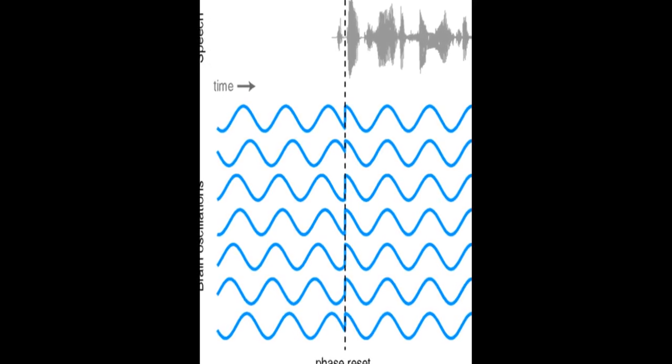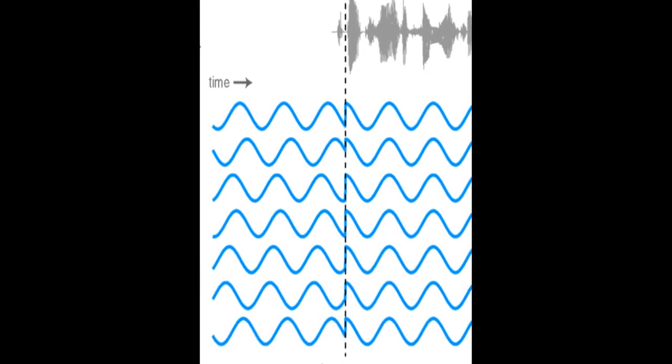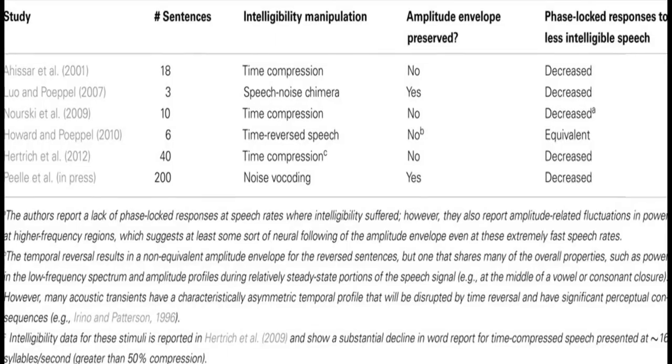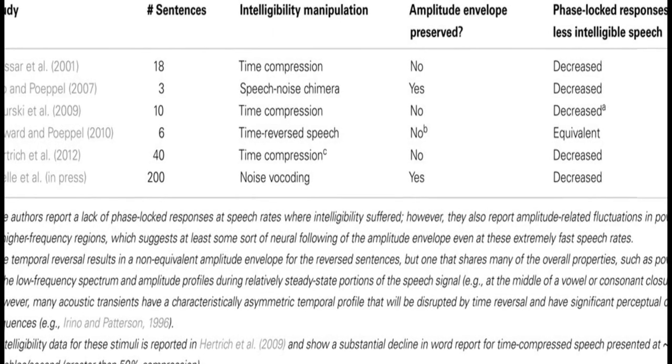The article discusses the importance of speech rhythm and how it is conveyed through amplitude modulations in speech. These modulations contain important markers for place and manner of articulation, segmental information, and speech rate.